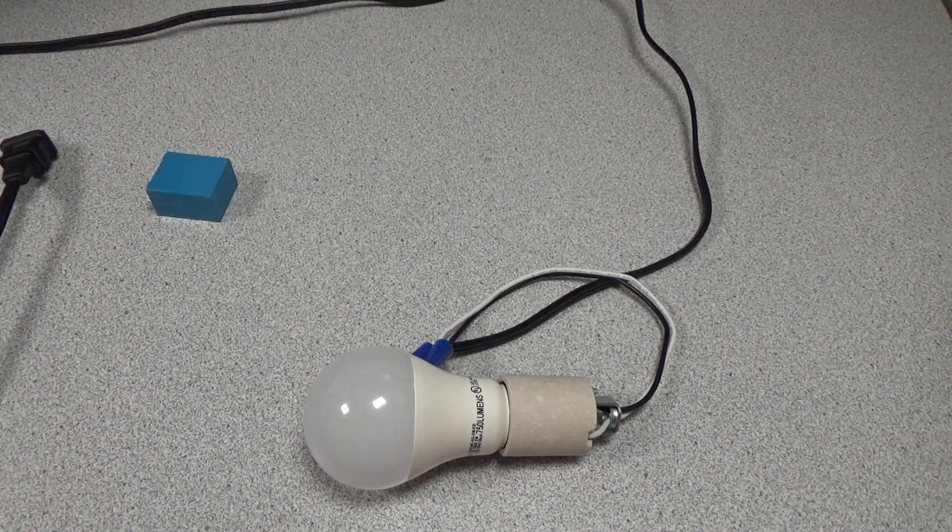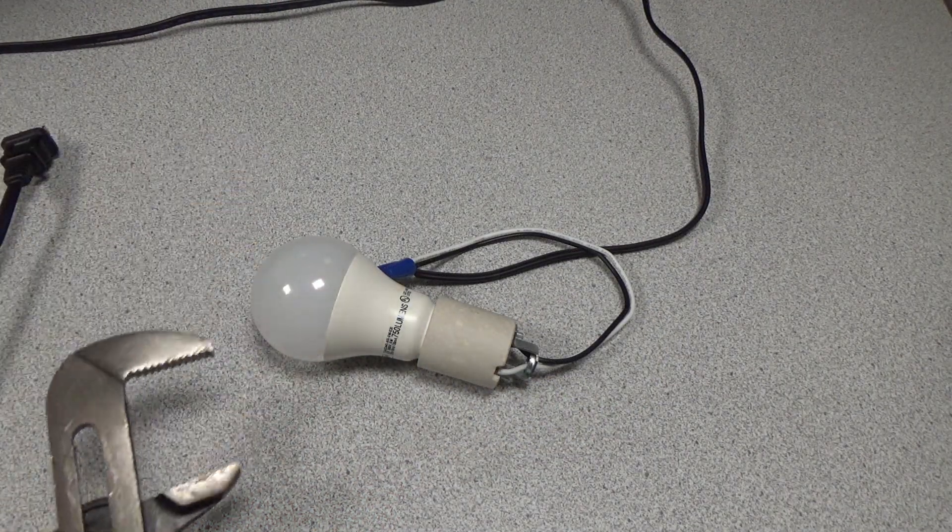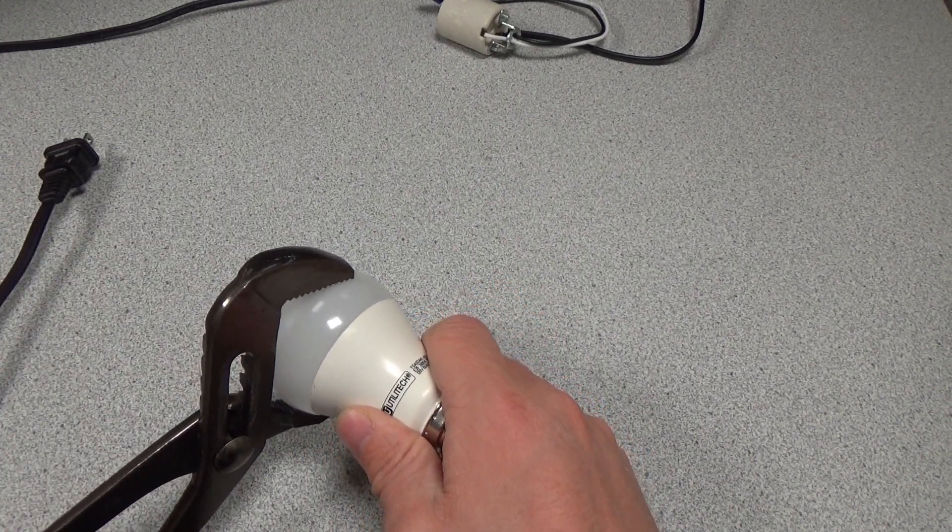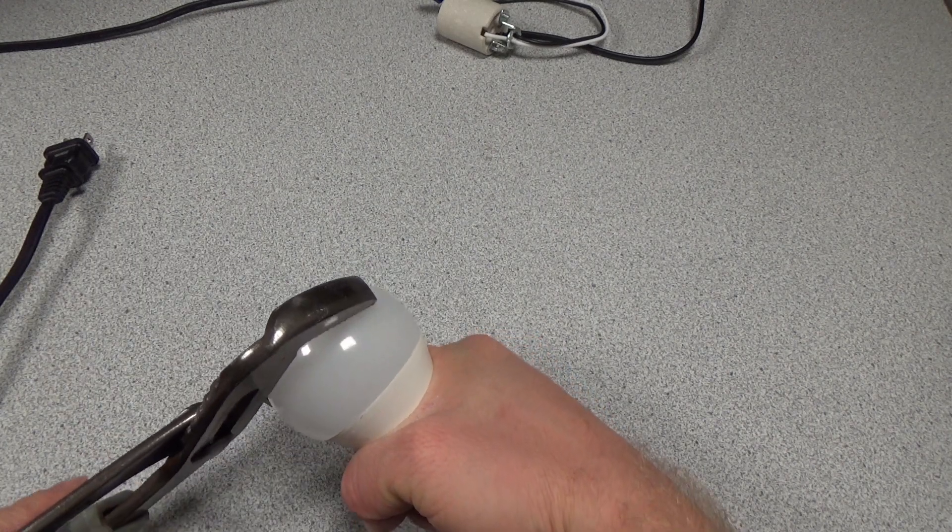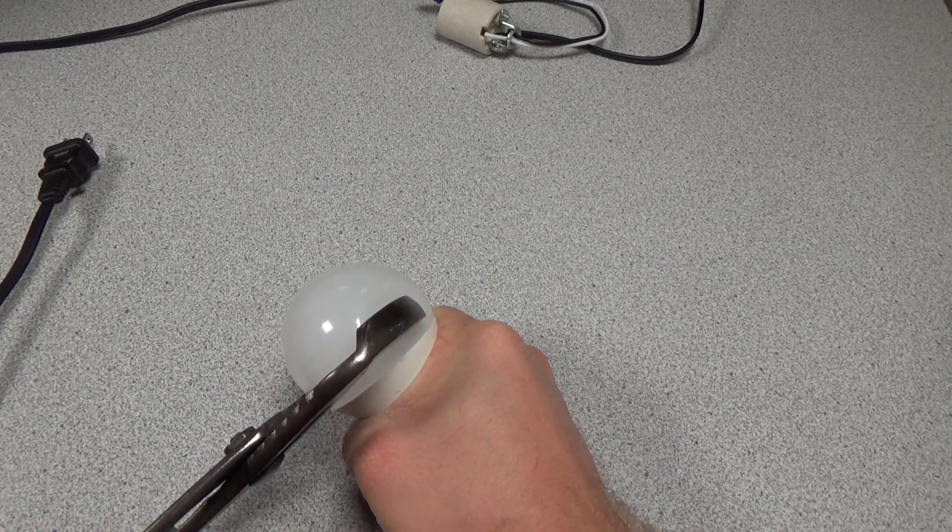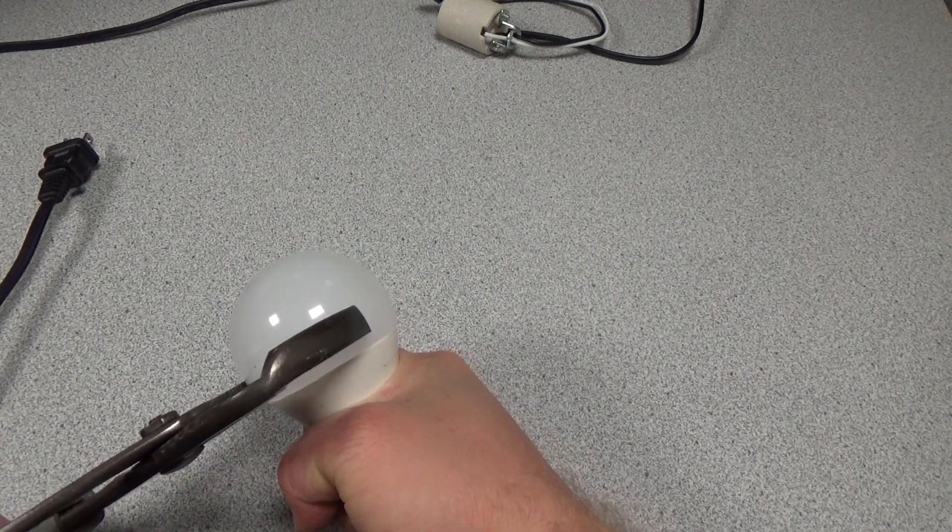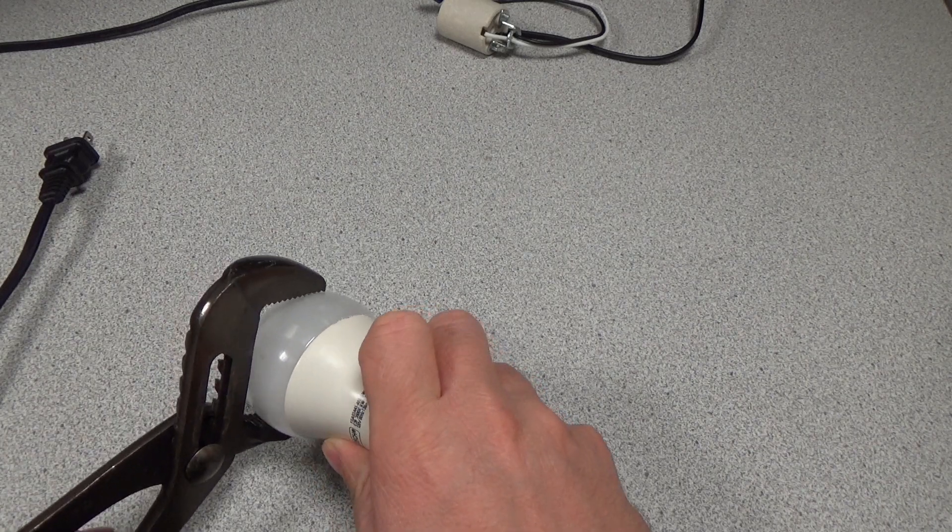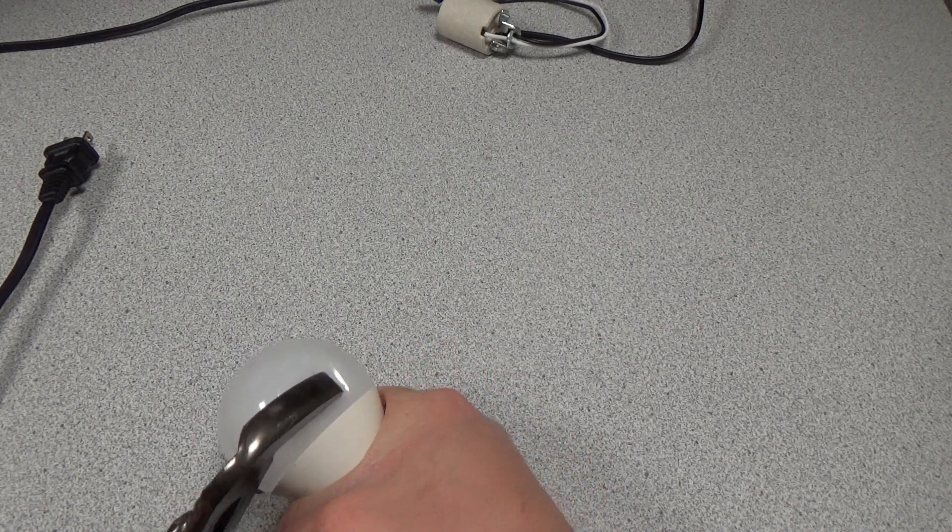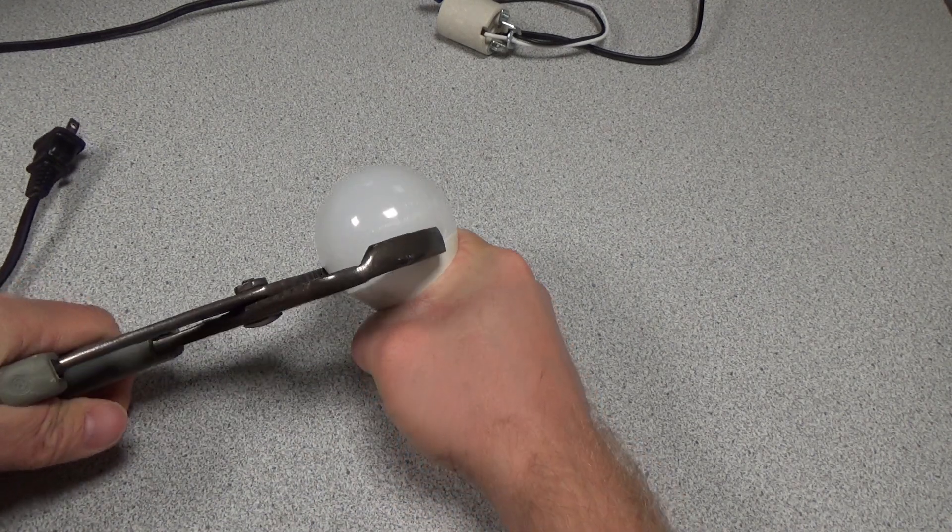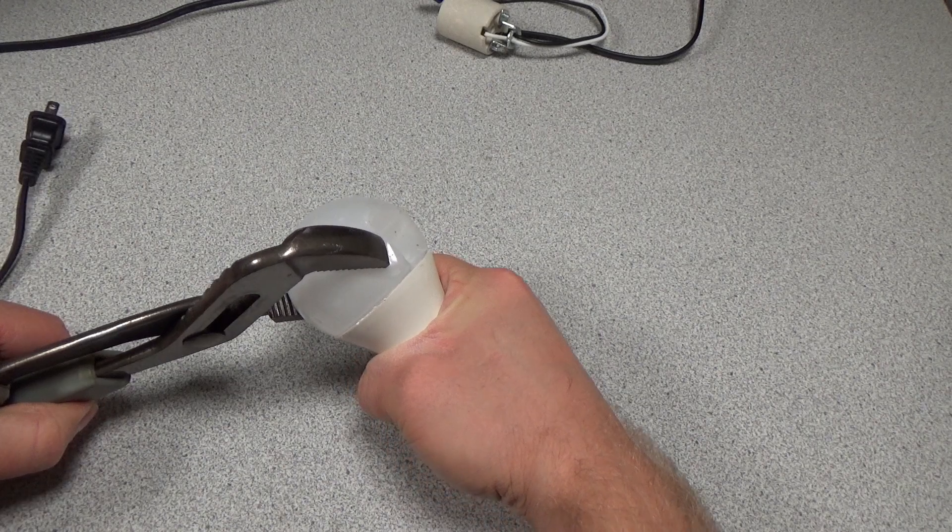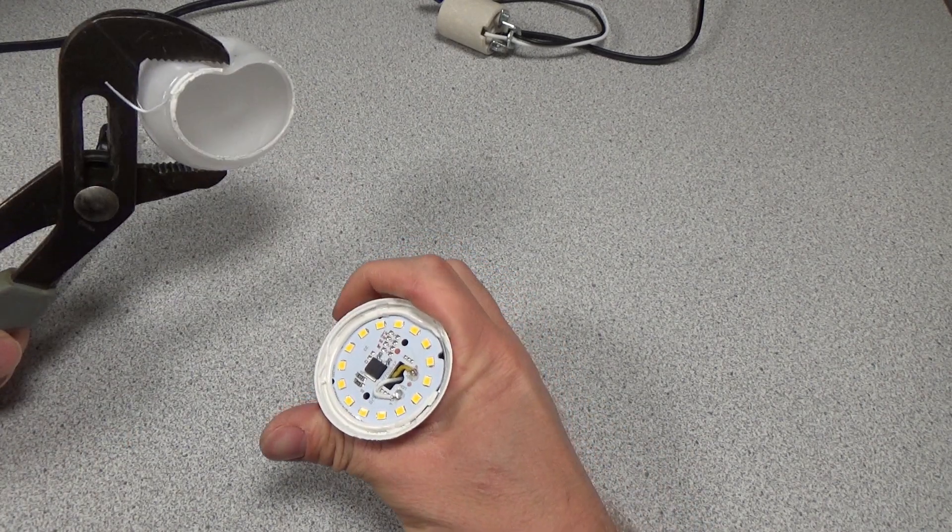Alright, we'll get this flickery meter out of the way here. We're going to bring in a persuasion tool to try and get this thing opened up. Alright, we're in.